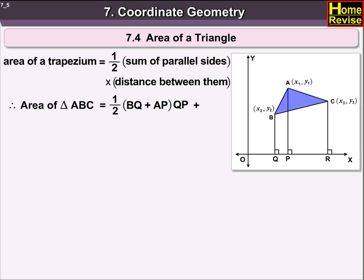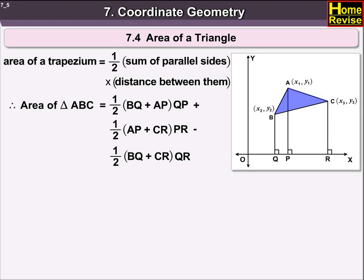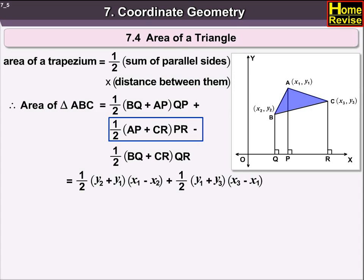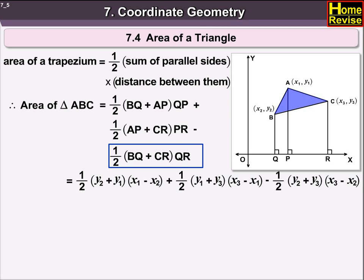Therefore, area of triangle ABC is equal to half into (BQ + AP) into QP, plus half into (AP + CR) into PR, minus half into (BQ + CR) into QR. That equals half into (y₂ + y₁)(x₁ − x₂) plus half into (y₁ + y₃)(x₃ − x₁) minus half into (y₂ + y₃)(x₃ − x₂).